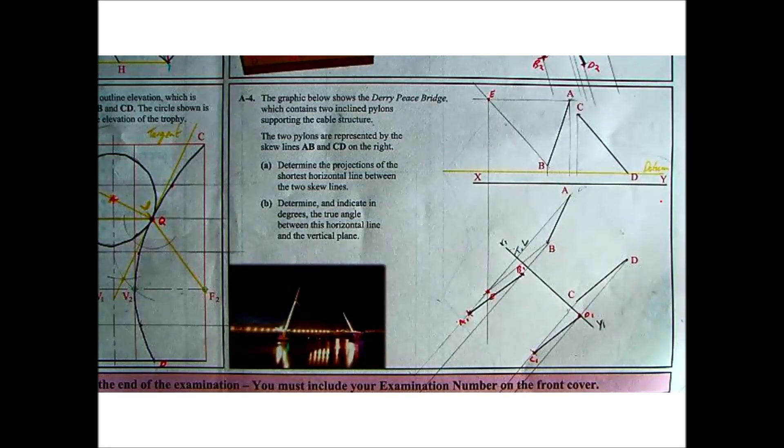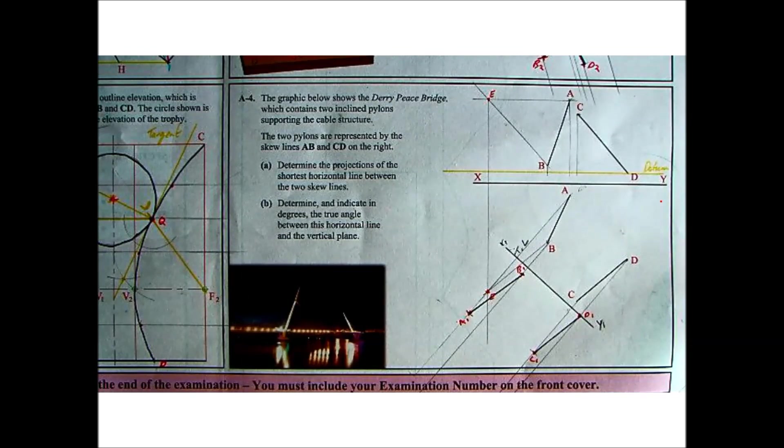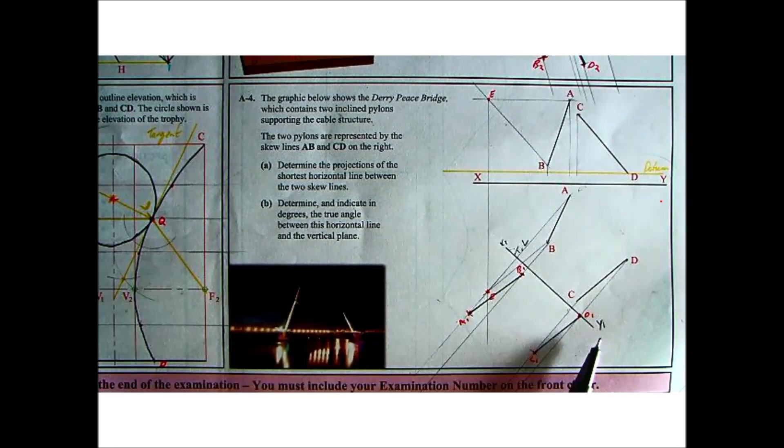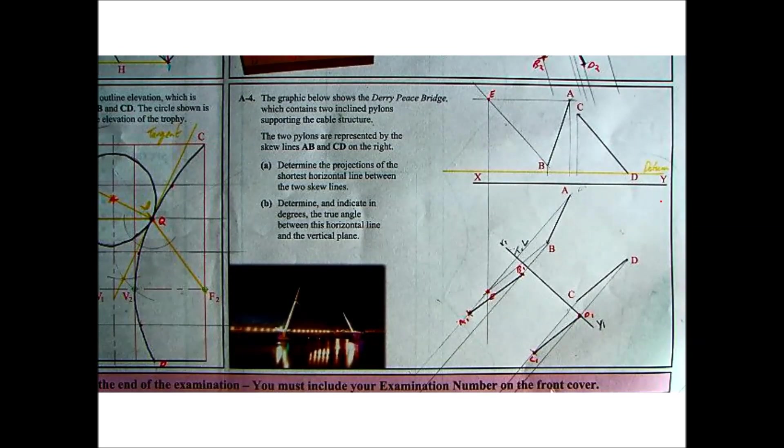Okay. So that's the first auxiliary view. Now, what we do from here on out depends on what they asked for. So the term of the projection is of the shortest horizontal line between the two skew lines. So the shortest horizontal line, that means we need to project our second auxiliary view, the same angle as our X1, Y1.